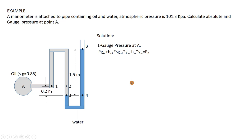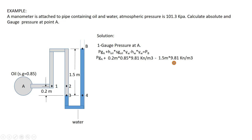Now let's put in the numbers. Pressure at point A plus 0.2 meters × specific gravity of oil × gamma_water, which equals gamma of oil, minus 1.5 meters × 9.81 kN/m³, which is gamma_water, equals pressure at point B. Because we are calculating gauge pressure, at any point open to atmosphere the pressure is zero, so pressure at point B equals zero.